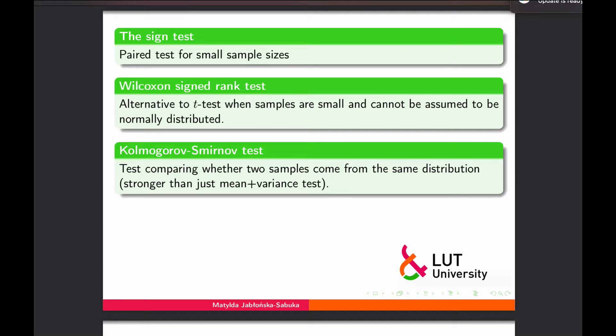The next one is Wilcoxon's signed rank test. When we were testing two sample means with unknown variances, we used the t-procedure. But that t-procedure is only allowed if you have a big enough sample size, or if the sample size is small, you can assume normality. If you have a small sample size — like 10 or fewer observations — you should verify normality before using a t-test. If the sample size is small and you cannot assume normality, you should use Wilcoxon's signed rank test.